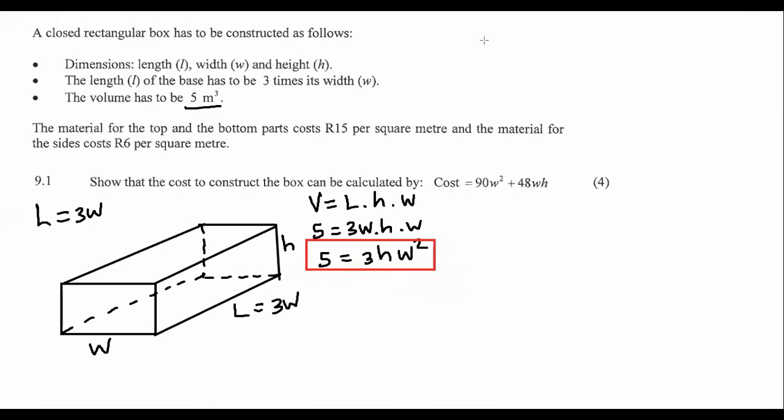So now we're going to move on to the next part of the question, which says that the material for the top and the bottom is 15 rand per square meter. And then the material for the side is only 6 rand per square meter. They're saying here, show that the cost to construct the box can be given as this. So what I want you to realize is that they're talking about per square meter. That is not volume, that is surface area.